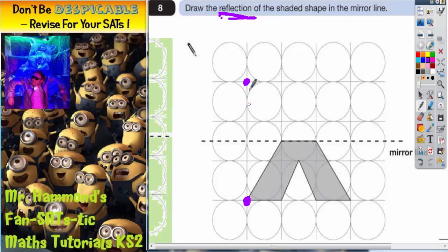Each corner's got to be the same distance from the mirror on either side of the mirror line. So one and a half squares either side. This corner is also one and a half to the mirror, so one and a half on the other side.